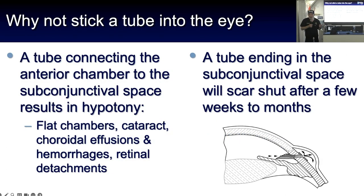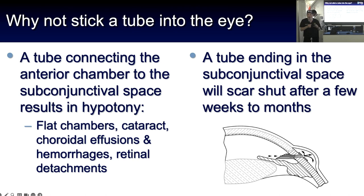A question people often ask is: why not just stick a tube in the eye? The problem is that people have been trying tubes for 200-plus years — pieces of horse hair and other things — to allow fluid to come out, but scarring always happens. There are new techniques such as the Preserflo and the Xen implant, which are tubes, but they will not work unless you apply very aggressive mitomycin. A tube that ends in the subconjunctival space with no wound management is just going to fail very quickly.